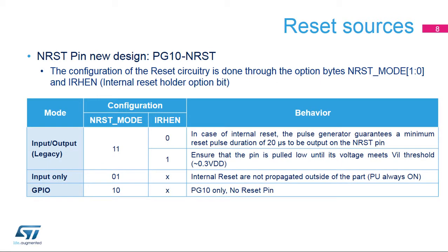Through specific option bits, the NRST pin is configurable for operating in three modes. In the first mode, a reset input-output (the default at device delivery), any valid reset signal on the pin is propagated to device internal logic, and all internal reset sources are externally driven through a pulse generator to this pin. The GPIO functionality on PG10 is not available. The pulse generator guarantees a minimum reset pulse duration of 20 microseconds. An internal reset holder option can be used, if enabled in the option bytes, to ensure the pin is pulled low until its voltage meets the VIL threshold. This guarantees detection of internal reset sources by external components when the line faces a significant capacitive load. In case of an internal reset, the internal pull-up RPU is deactivated to save power consumption.